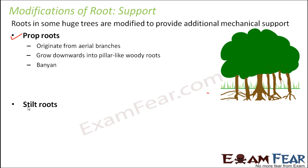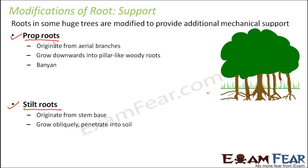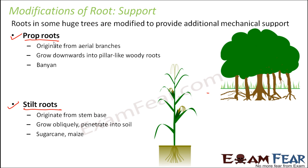The second type are stilt roots. They are also supporting roots, but they originate from the stem base. They grow obliquely — not vertically downwards but at an angle — and then penetrate deep into the soil. Examples of stilt roots are sugarcane and maize. The roots arise from the stem base at an angle and gradually penetrate into the soil.